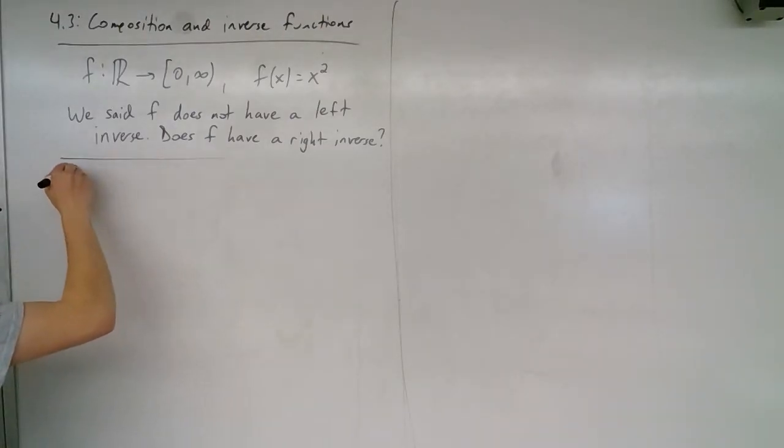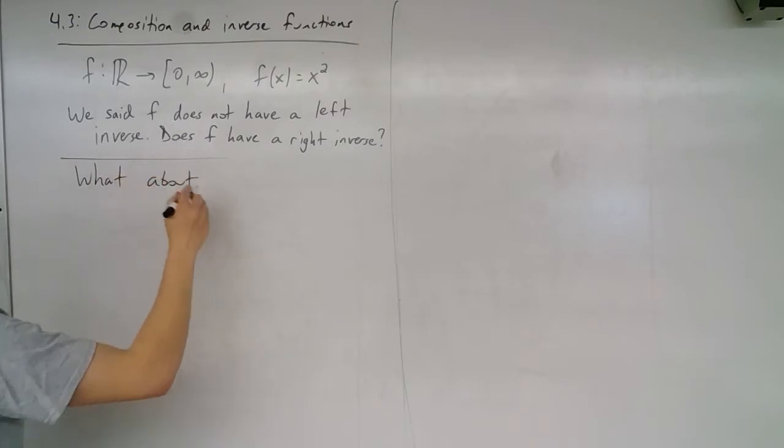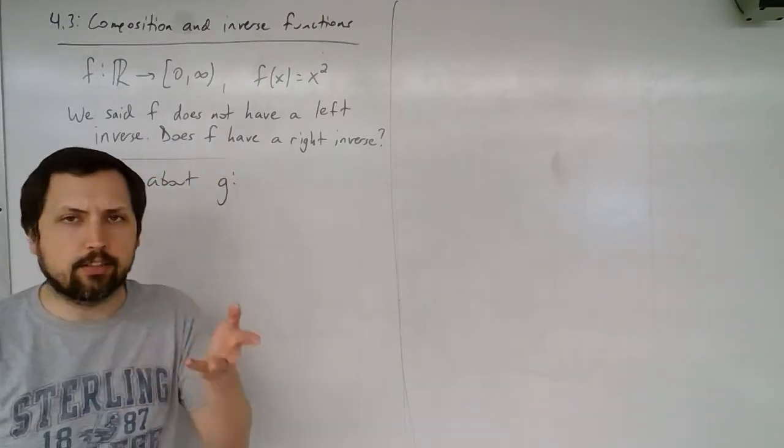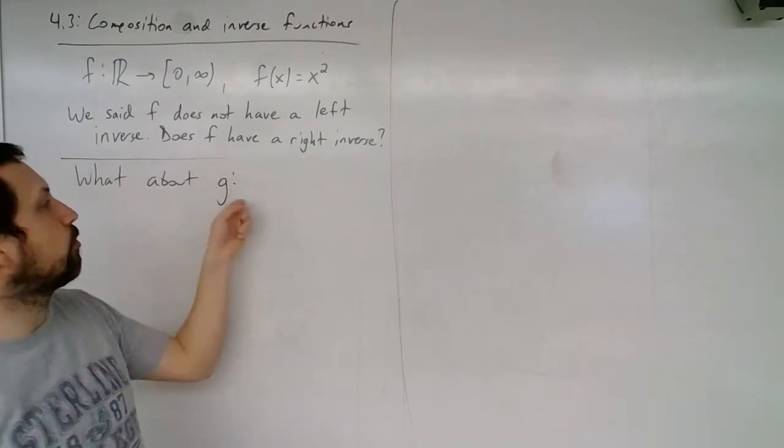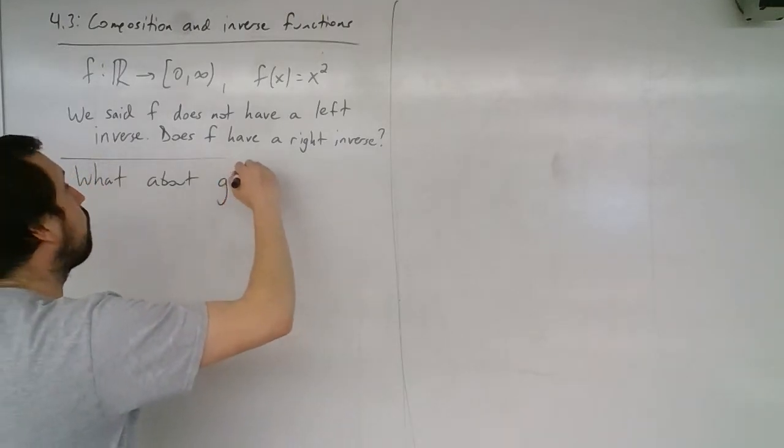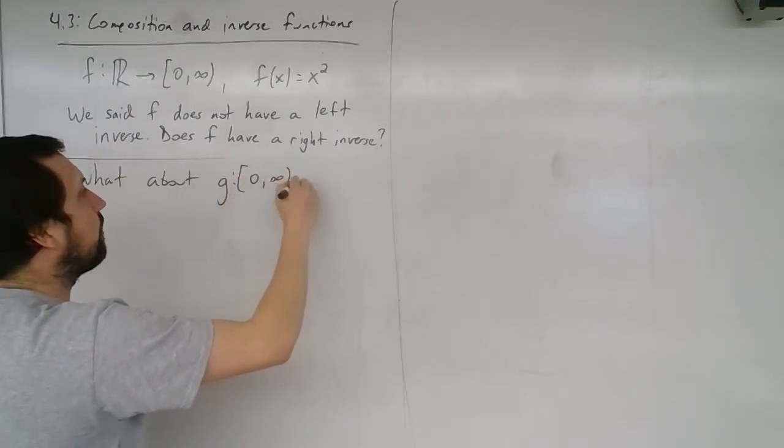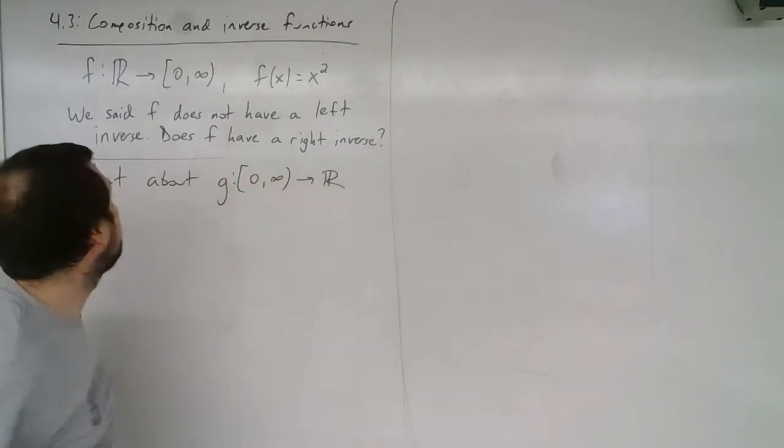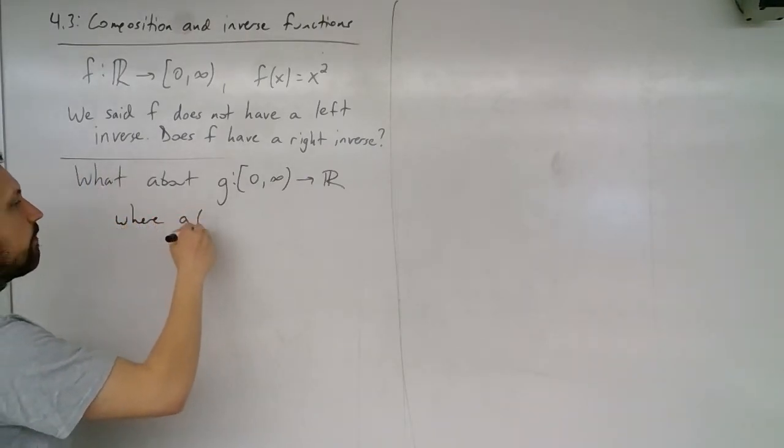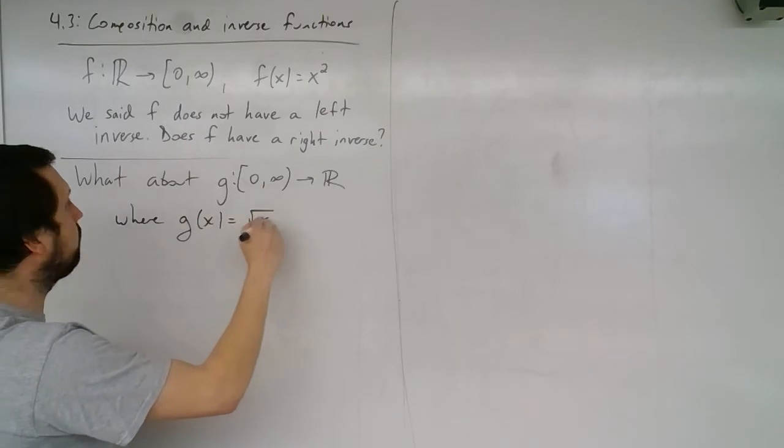So let's consider, what about g? Now let's create this inverse, or maybe if this is a right inverse, let's try this g. Remember, we have to have opposite domains and codomains, so this is going to be [0,∞) mapped into the reals, where g(x) is equal to the square root of x.